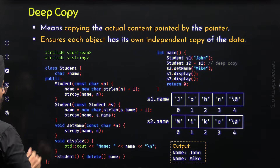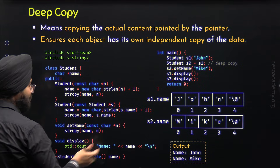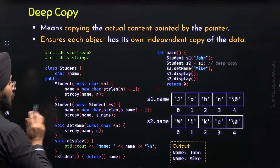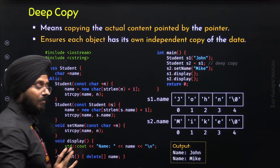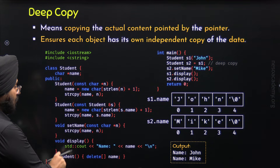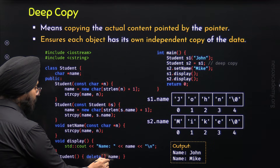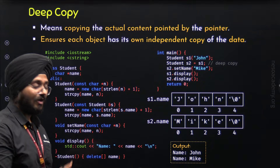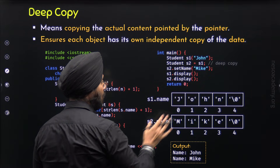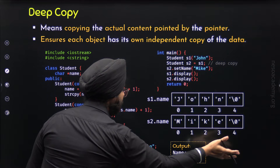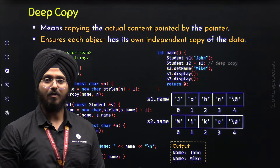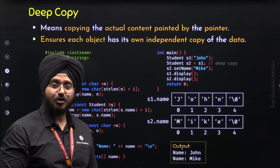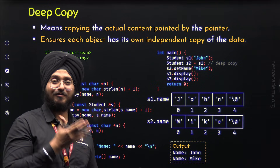The destructor will be called on S1 and S2. When called on S1, it will deallocate the S1 dot name array from the heap. When the destructor is called on S2, it will deallocate the S2 dot name array. We can observe that each memory location is deallocated only once — it is not the case that the same memory is deallocated twice. Therefore, there is no double deletion problem in case of deep copy. With this, we have addressed both limitations and resolved them with the help of deep copy.